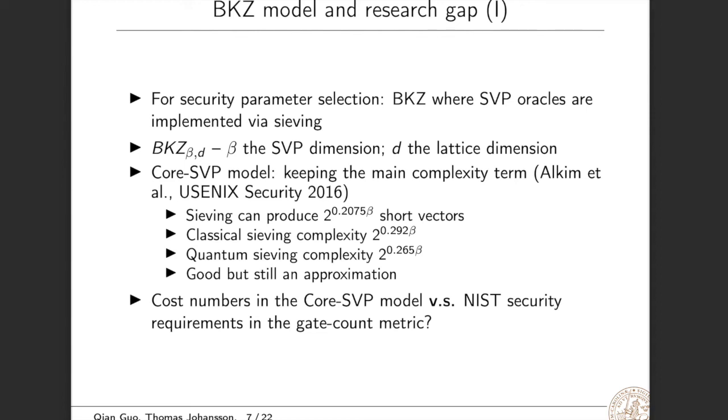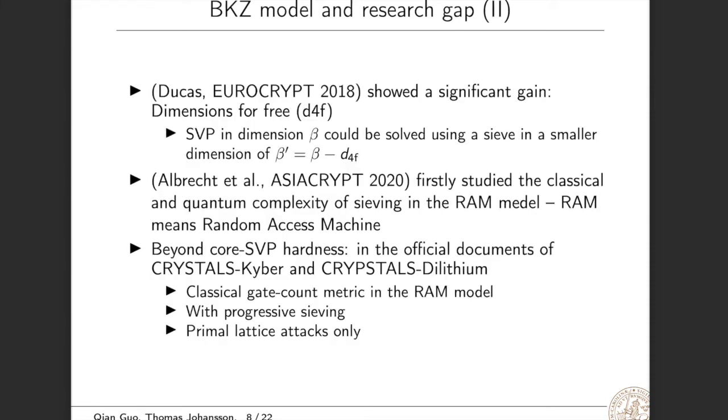So this Core SVP model is very good because we can compare the security strengths of different lattice-based proposals. But this model is still just an approximation because the discarded sub-exponential complexity terms can be significant. We have a new research problem: given cost numbers represented in the Core SVP model, how to determine if this number meets the security requirements from NIST, which is represented in the gate count metric. In Eurocrypt 2018, Ducas showed a significant gain called dimensions-for-free. It means that SVP in dimension beta could be solved using a sieve in a smaller dimension. Later, Albrecht et al. in AsiaCrypt 2020 firstly studied the classical and quantum complexity of sieving in the RAM model. Here RAM means random access machine.